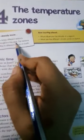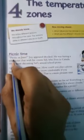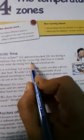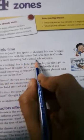As we already know that we enjoy different seasons throughout the year. The seasons differ in different places on earth. So we will see here, Picnic time. P-I-C-N-I-C. Picnic in June. Joy appeared shocked. He was having a telephone chat with his cousin Sid who lives in Canada. They were discussing Sid's annual school picnic.